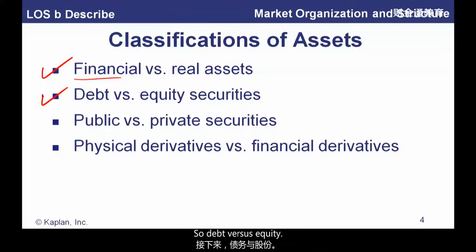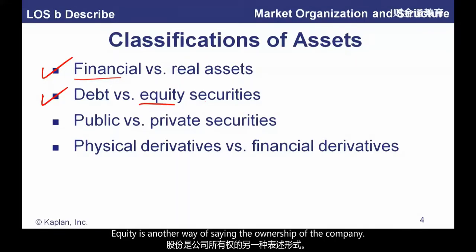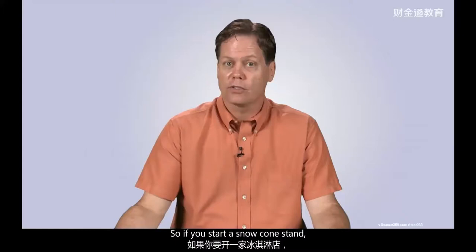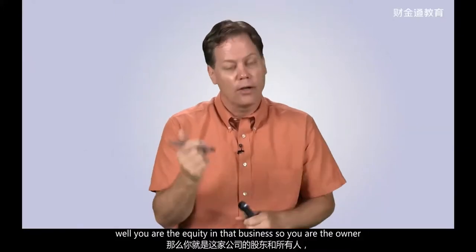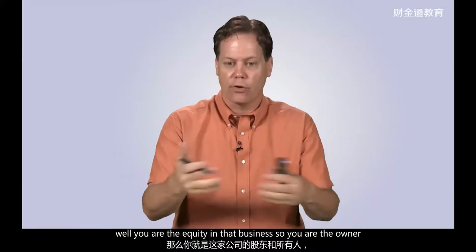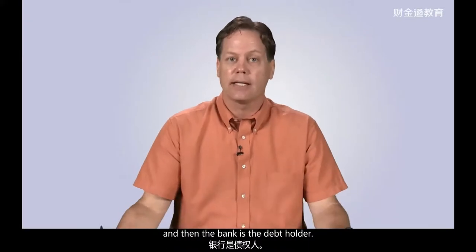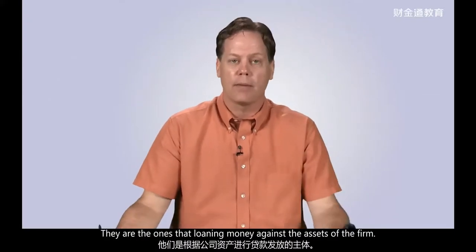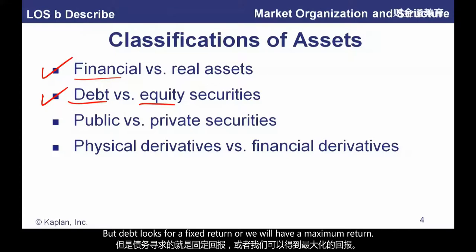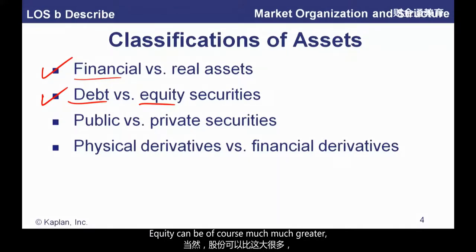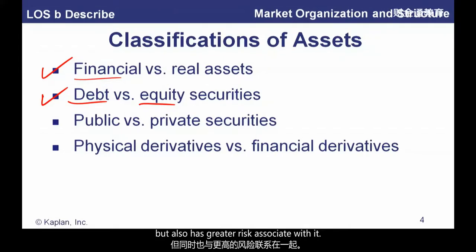Now, the classification of assets. We have financial versus real assets. Financial assets are going to be stocks, bonds, contracts, and those types of things. Real assets in this context are real estate, as well as machines, railroad rolling stock, 747s, and that type of stuff. Debt versus equity: equity is another way of saying ownership of a company. If you start a snow cone stand, borrow $5,000 from the bank and put up $5,000 of your own money, you are the equity — the owner. The bank is the debt holder. Debt typically looks for a fixed or maximum return, while equity can have much greater returns but also greater risk.